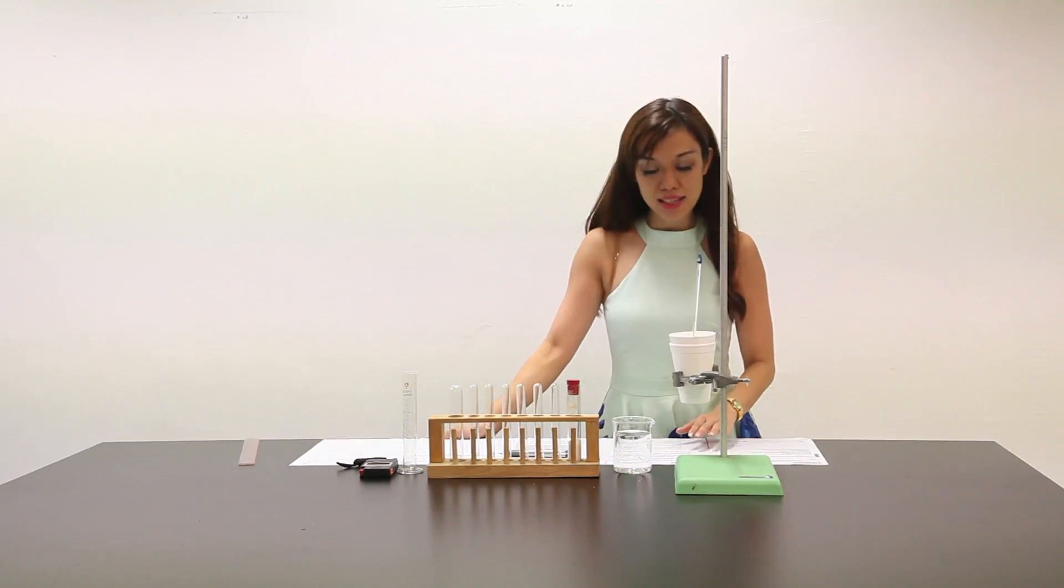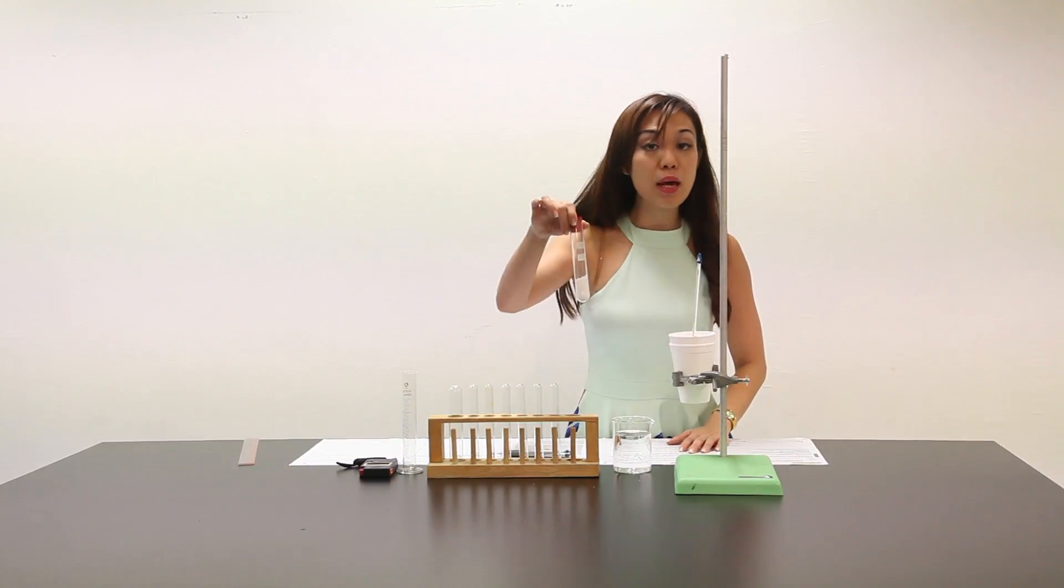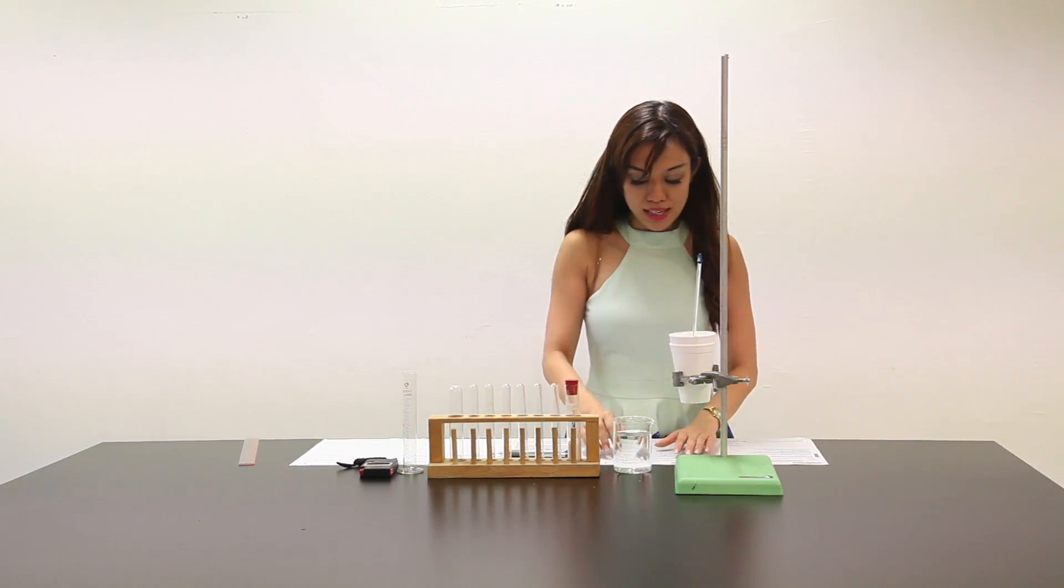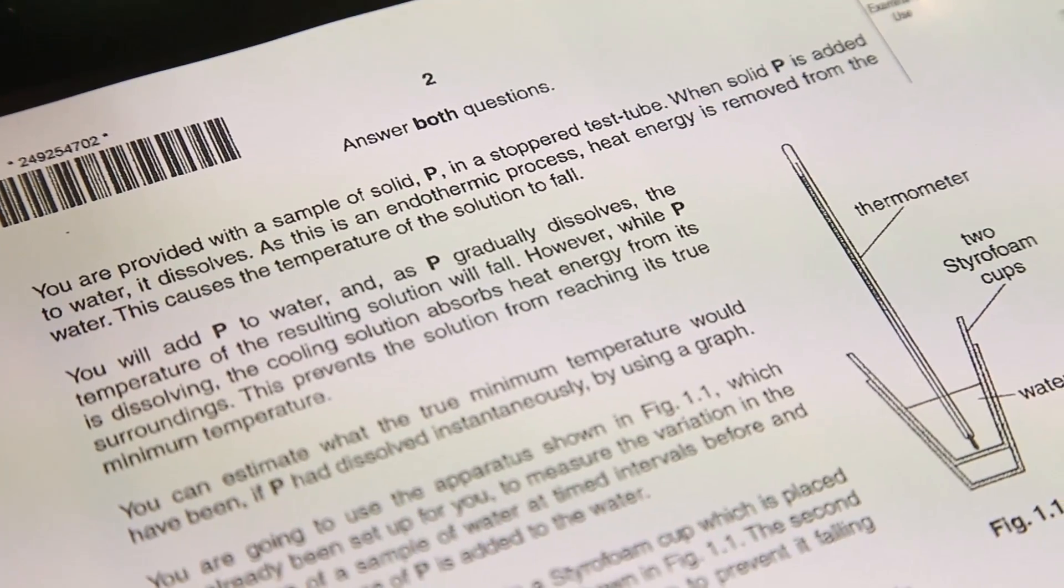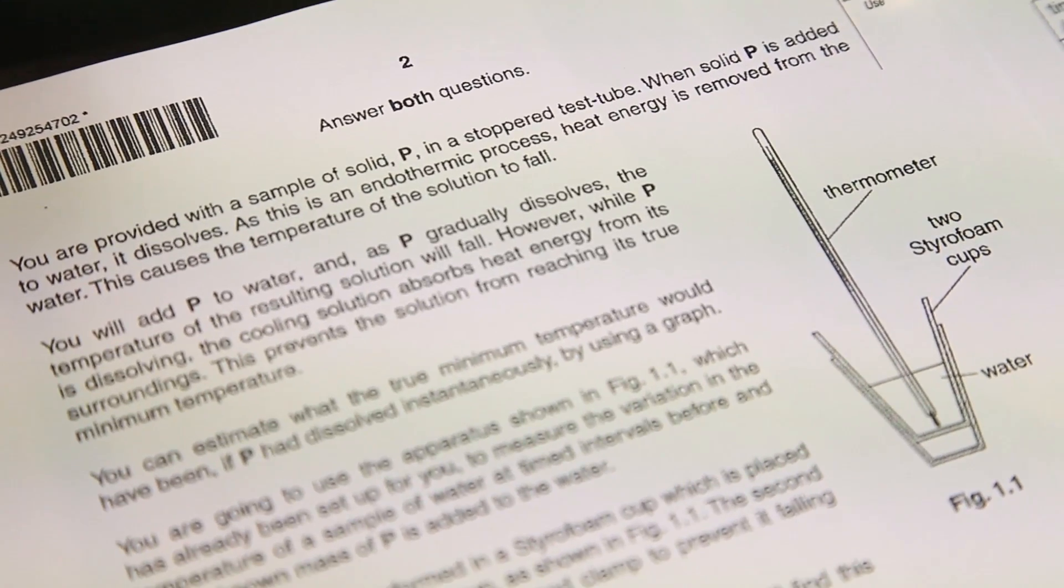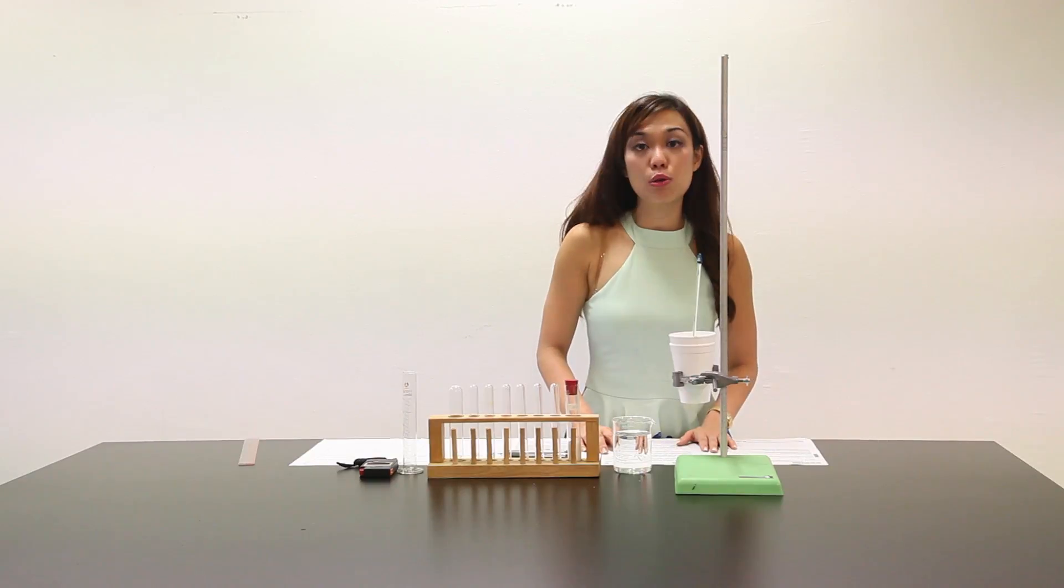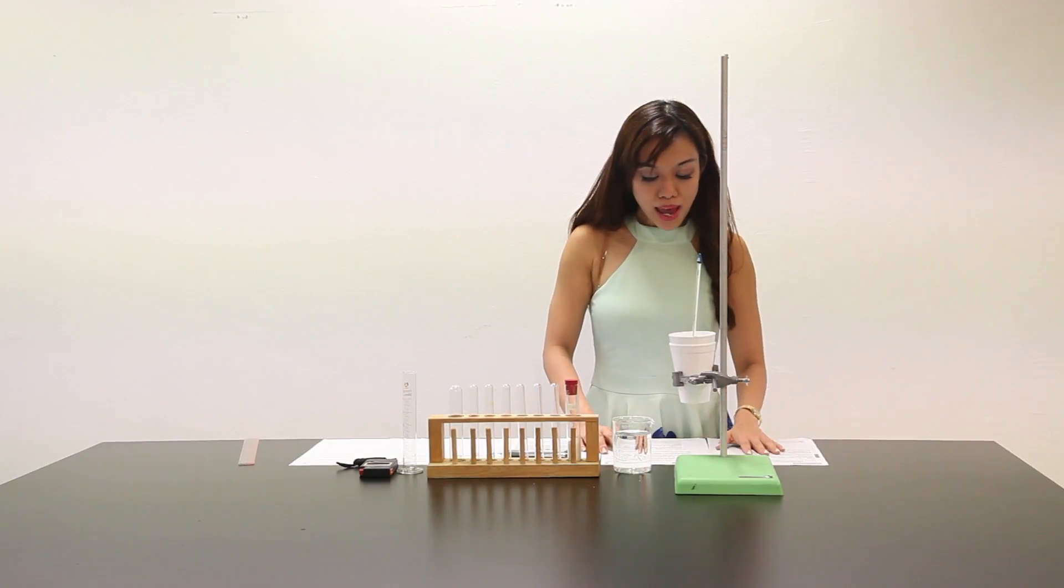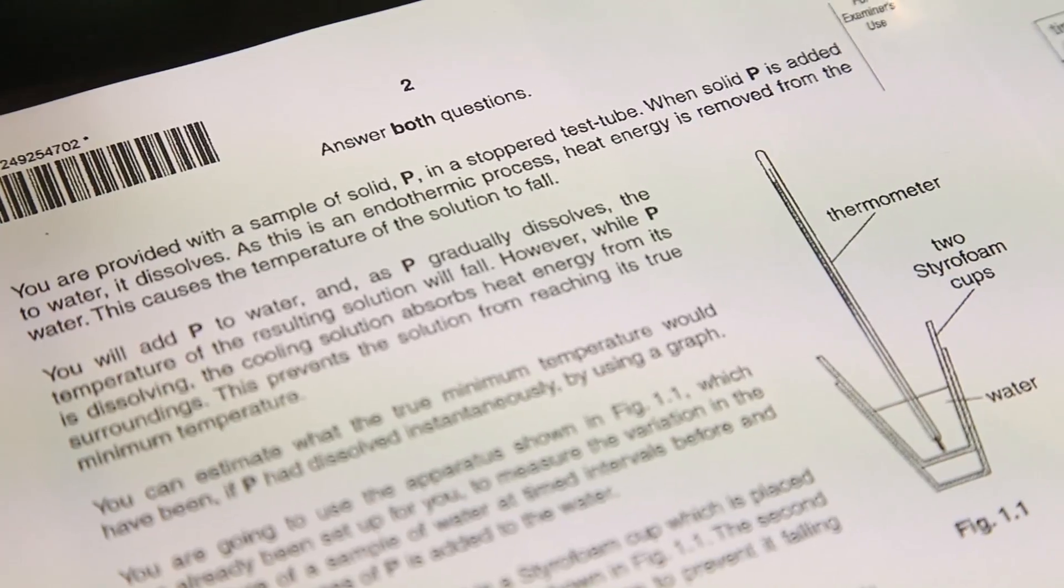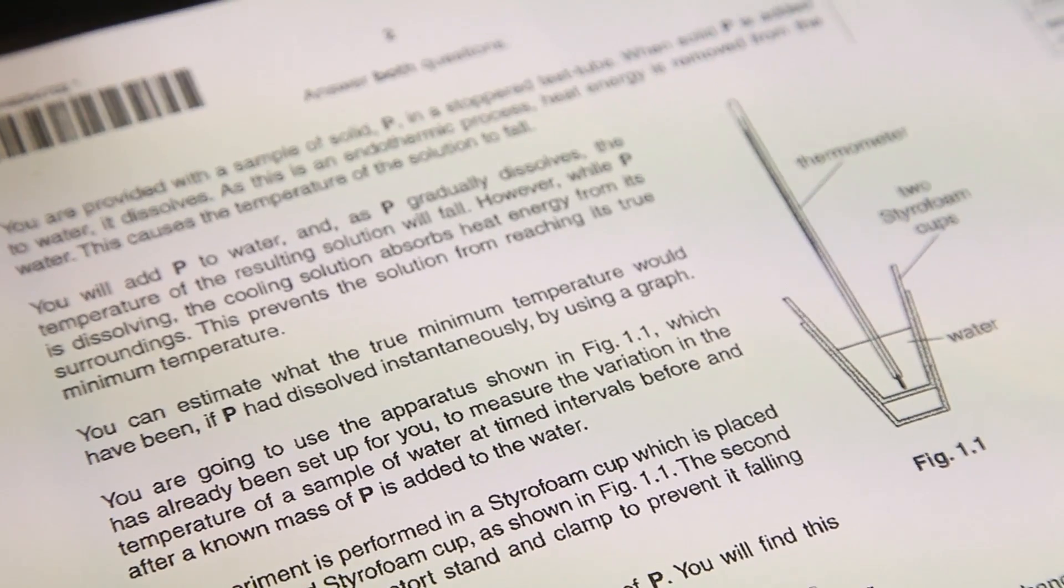The question says you are provided with a sample solid P. This is sample solid P in a stoppered test tube. When P is added to water, it dissolves. As this is an endothermic process, heat energy is removed from the water and this causes the temperature of the solution to fall. You will add P to water and as P gradually dissolves, the temperature of the resulting solution will fall.